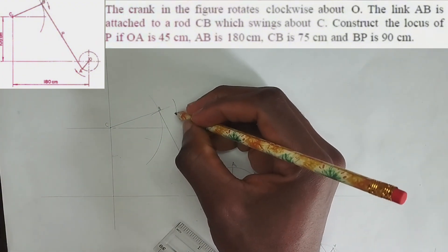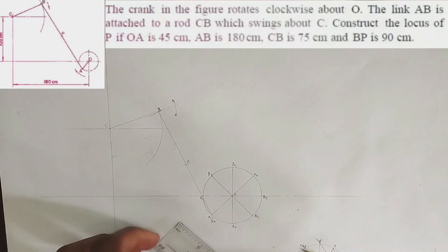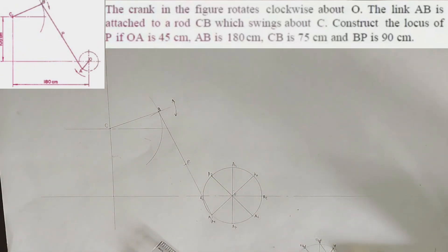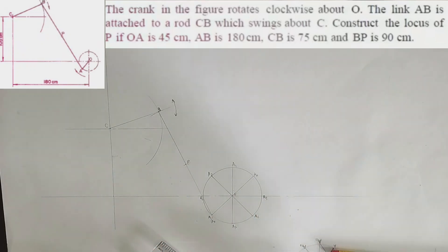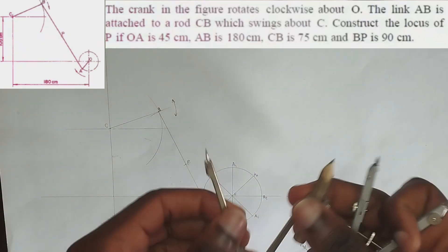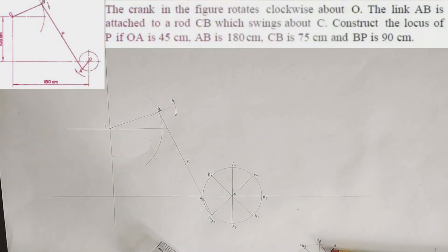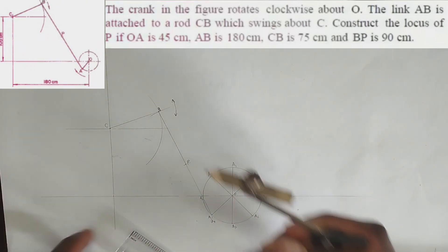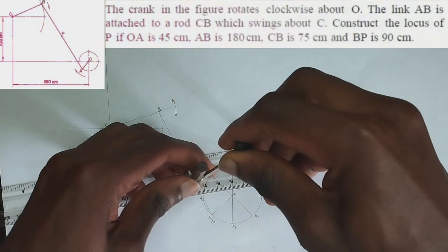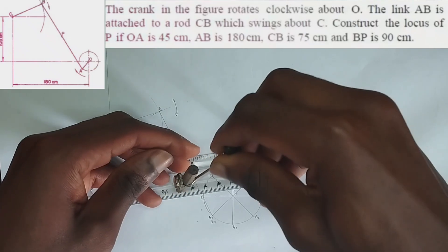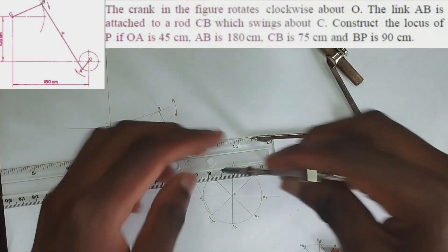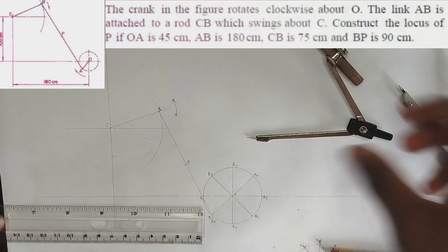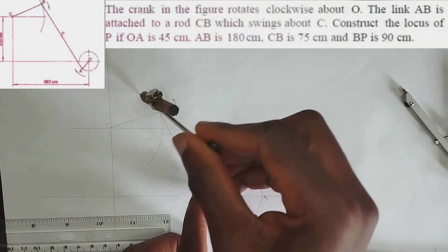Now we are going to start drawing the locus. This mechanism is swinging. To make it easier, I would advise you to use two compasses — or a divider and a compass — because we will be using two measurements simultaneously and I wouldn't want you to keep changing your compass. We start with point A1 to B1. AB is 90, so we set one compass to 90 and the other to 45, which represents BP.